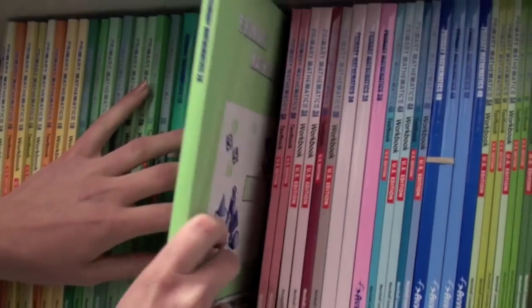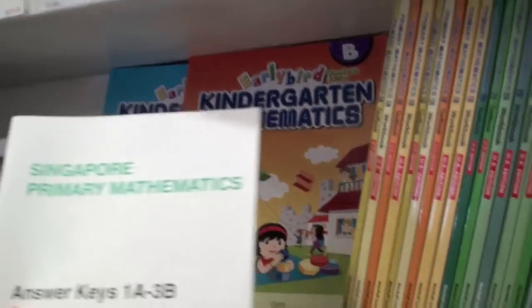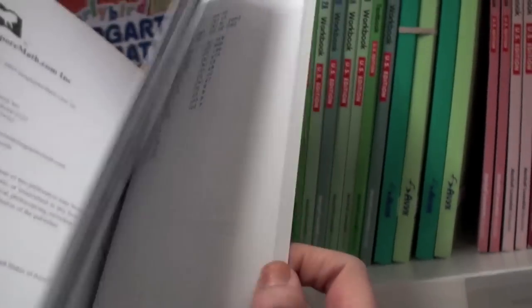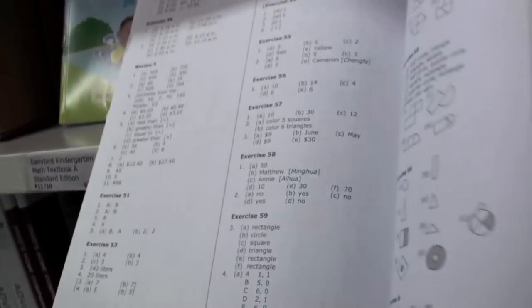We also offer an answer key for levels one through three and levels four through six. This just has the answers to each of the lessons, as you can see in here. So those are the differences between Saxon and Singapore math for elementary grades.